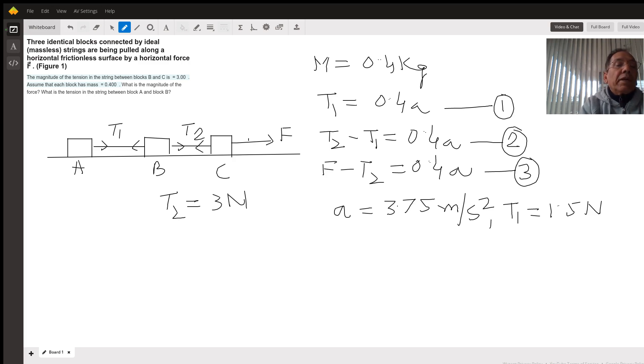If I look at the free body diagram of mass A, the tension on A is moving it with acceleration a. So T1 equals 0.4a. That's equation one.